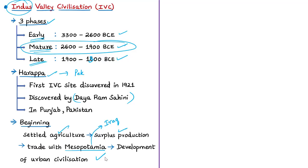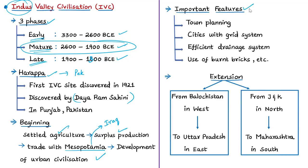The civilization is known for its town planning — well-planned cities with a grid system, efficient drainage systems, and big buildings such as granaries and stadiums. Even houses had a strict plan and used burnt bricks for construction. Granaries served as storehouses for grains.